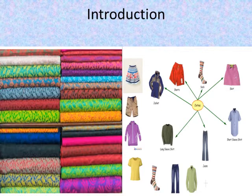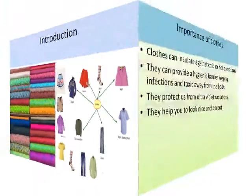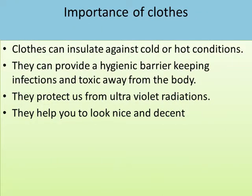Light-colored clothes absorb less heat. In winter, thick dark-colored woolen clothes are preferred, because wool traps our body heat and prevents it from escaping, and dark-colored clothes absorb heat and keep us warm. Regarding the importance of clothes: clothes can insulate against cold or hot conditions, they can provide a hygienic barrier keeping infections and toxins away from the body, they protect us from ultraviolet radiations, and they help you to look nice and decent.